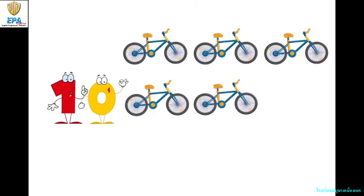This is a bicycle. Now let's count how many bicycles do we have. So we have one, two, three, four, five, six, seven, eight, nine, ten. Ten bicycles. Bicycles have two wheels.